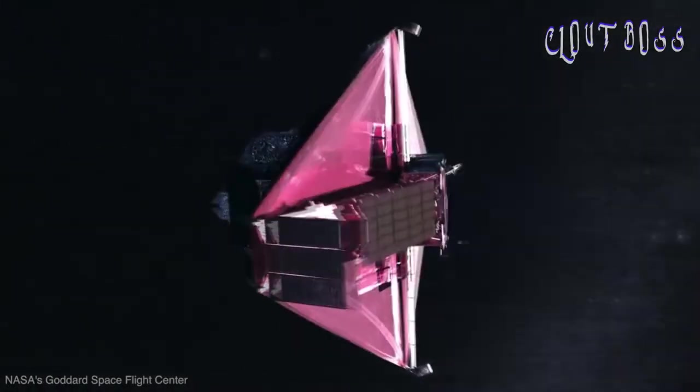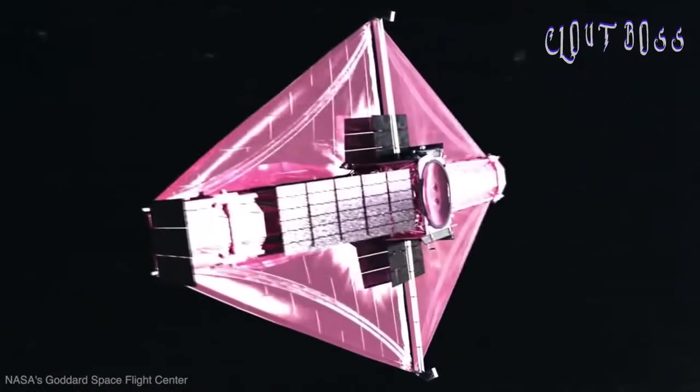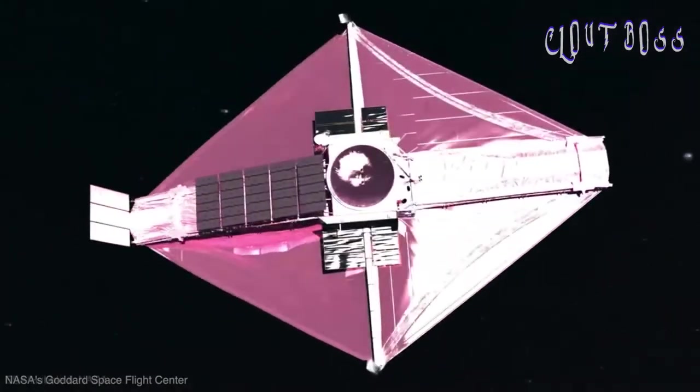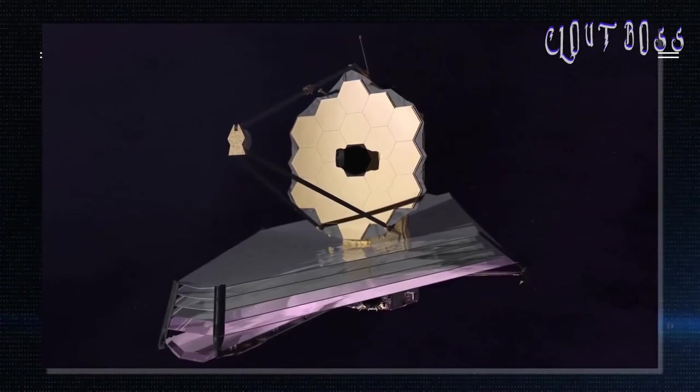JWST also has a tennis court-sized sun shield. This stops light from the sun and reflected off the Earth and moon from heating up its detectors. The detectors must be kept at a cool minus 266 degrees Celsius to work.